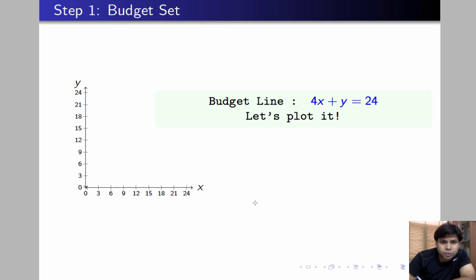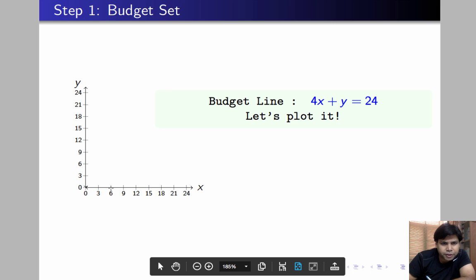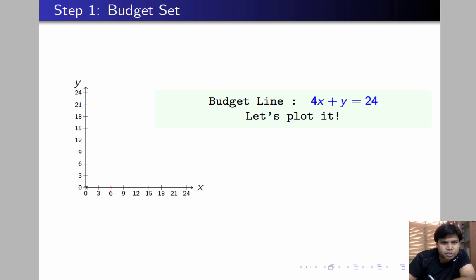Since 4x plus y equals 24, if the individual decides to spend all his money on x, then he can buy 6 units of x, so this point lies on the budget line. If the individual decides to spend all his money on y, then he can buy 24 units of y, so this point also lies on the budget line.